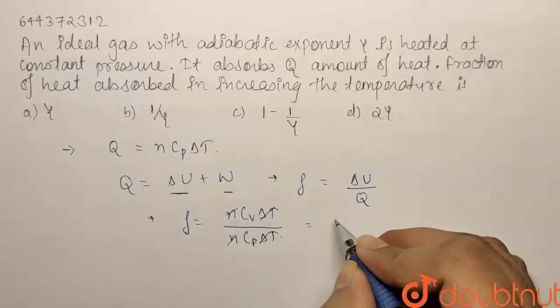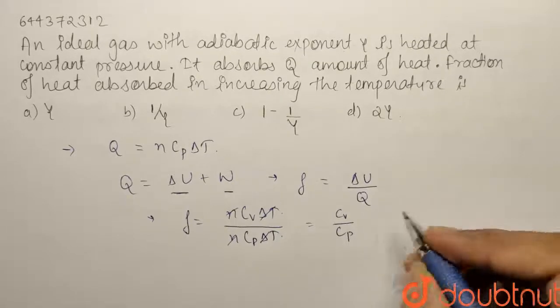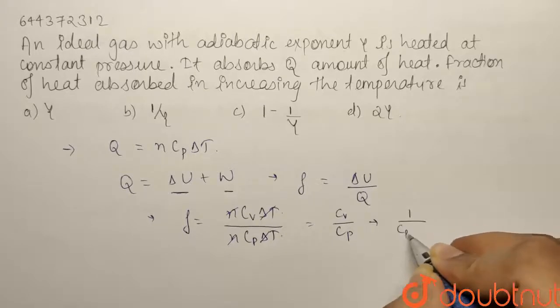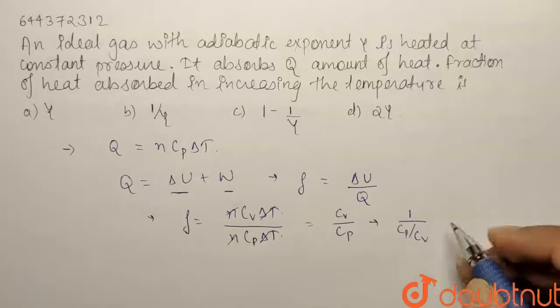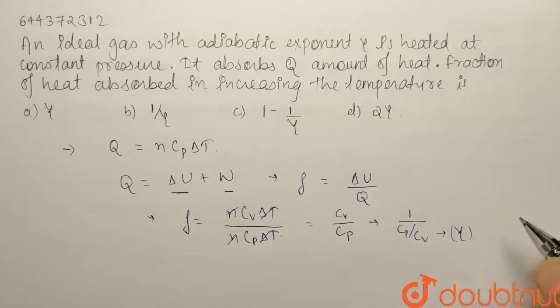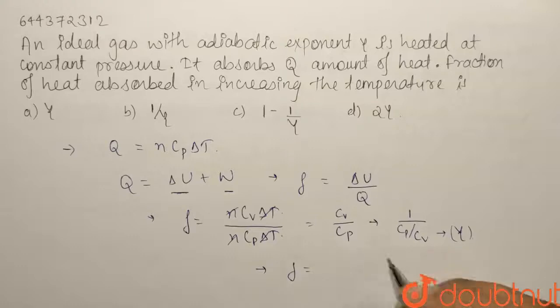Now we know that this can be written as 1 by Cp upon Cv, and Cp upon Cv is a very famous quantity and it is known as γ, that is the adiabatic heat exponent. So the given fraction F comes out to be equal to 1 by γ.